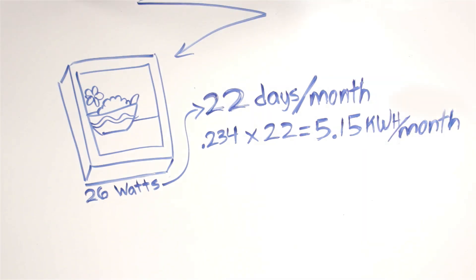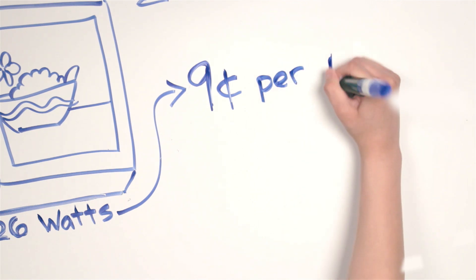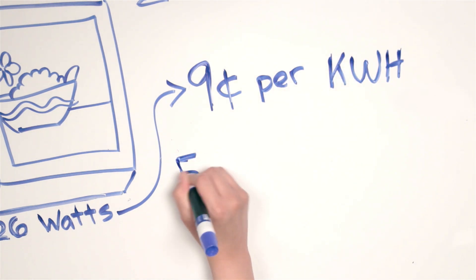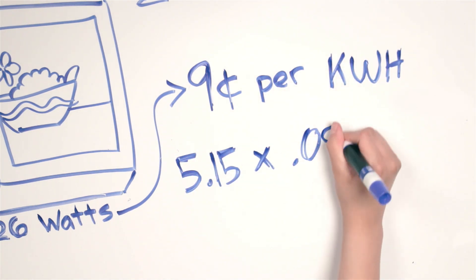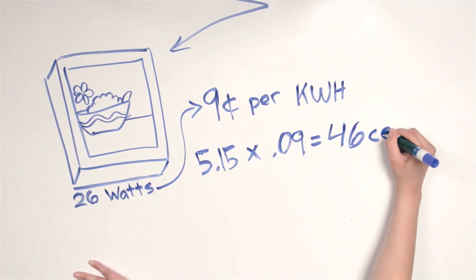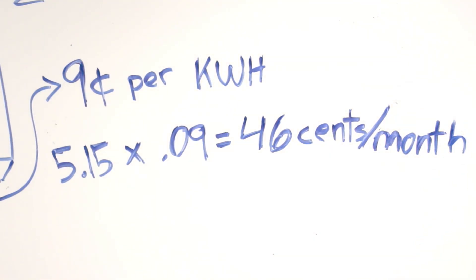And finally, suppose your local utility charge is 9 cents per kilowatt hour. That's 5.15 times .09, giving you 46 cents a month. And there's your total electrical cost for the example lightbox, 46 cents a month.